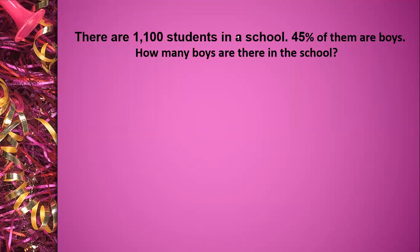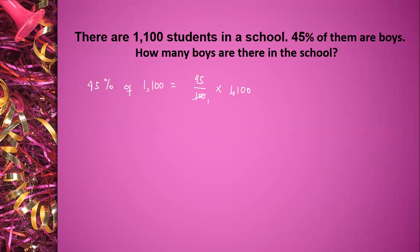There are 1,100 students in a school. 45% of them are boys. How many boys are there in the school? The solution: 45% of 1,100 students is equal to 45 divided by 100 times 1,100. 1,100 divided by 100 is equal to 11. 11 times 45 is equal to 495. Therefore, there are 495 boys in the school.